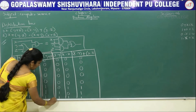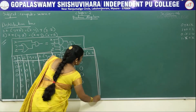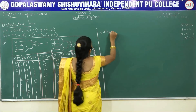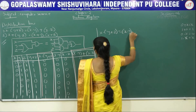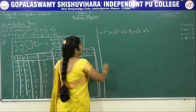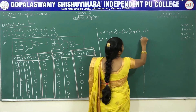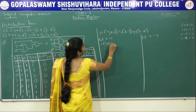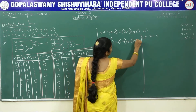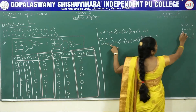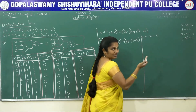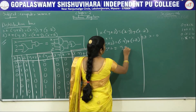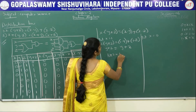Now we solve this by perfect induction method. The equation is x·(y+z) = x·y + x·z. We put x=1 first: 1·(y+z) = 1·y + 1·z. Since 1 into any number is that number itself (identity law), this becomes y+z = y+z. Therefore right-hand side equals left-hand side.